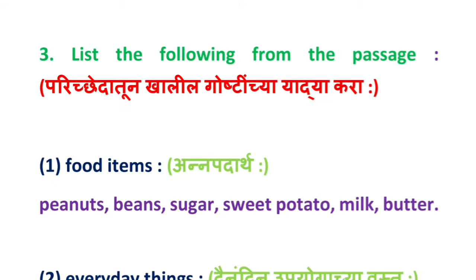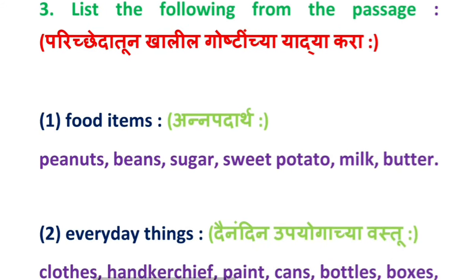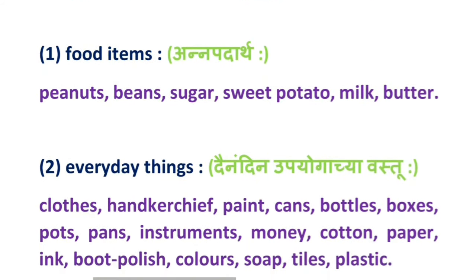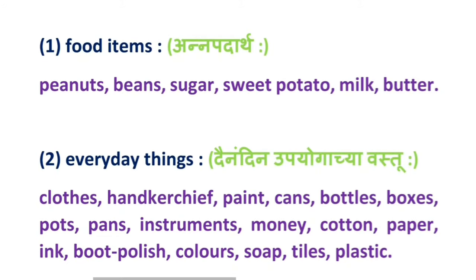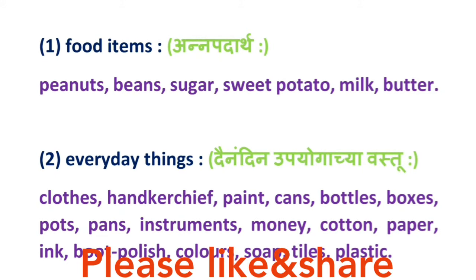Question number 3: List the following from the passage. Parichetatun khalil goshtincha yadya karayche aahe. Number 1: Food items — je anna padhartho yachhi list karayche aahe. Ataa: peanuts, beans, sugar, sweet potato, milk, butter.